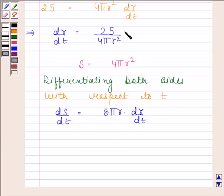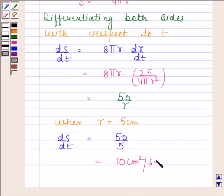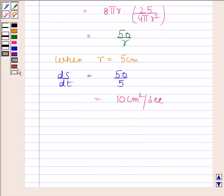Now dr/dt = 25/(4πr²). So dS/dt equals 50/r. When r = 5 cm, dS/dt = 50/5 = 10 cm²/sec. Hence our required answer is 10 cm²/sec.